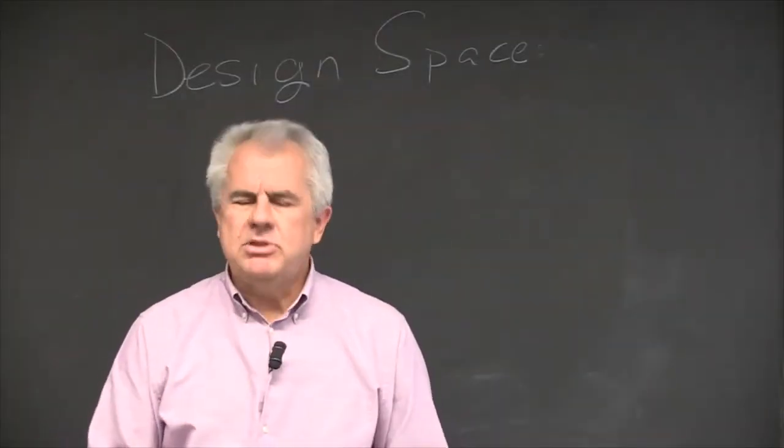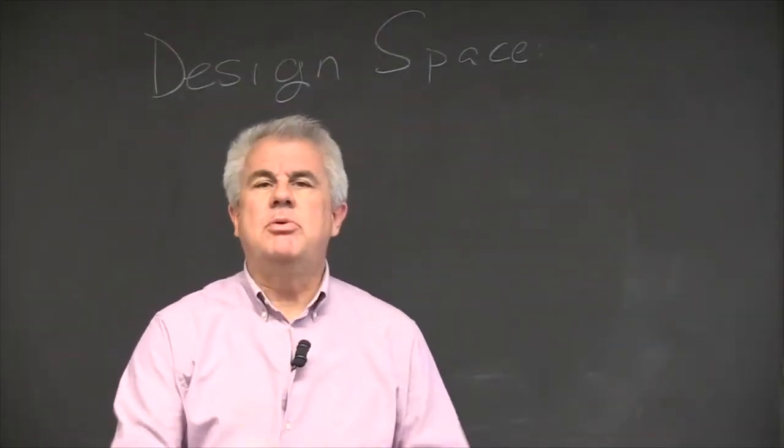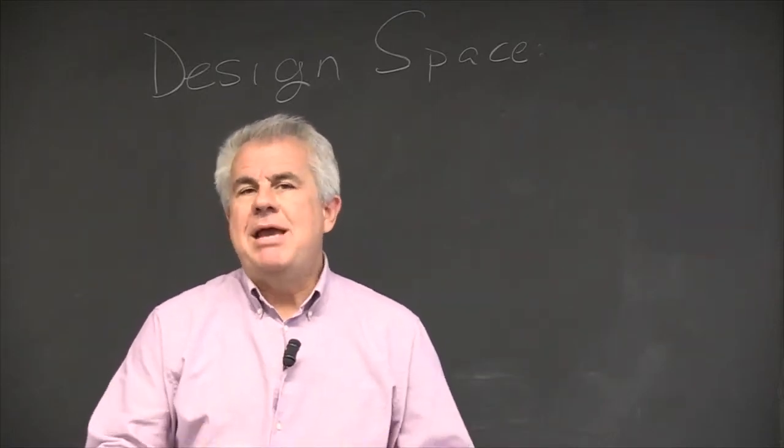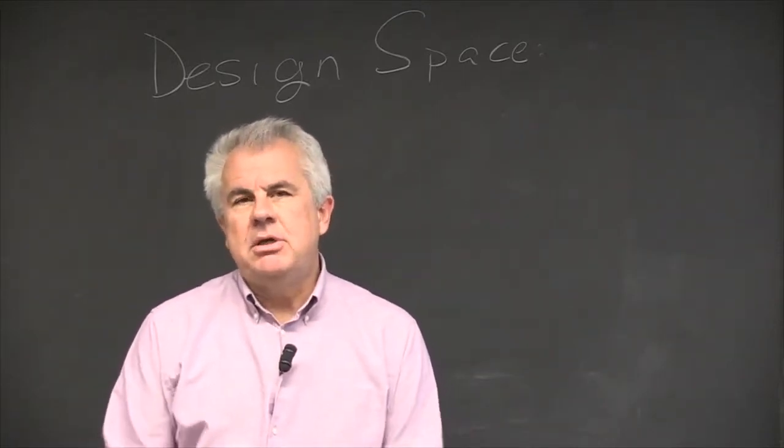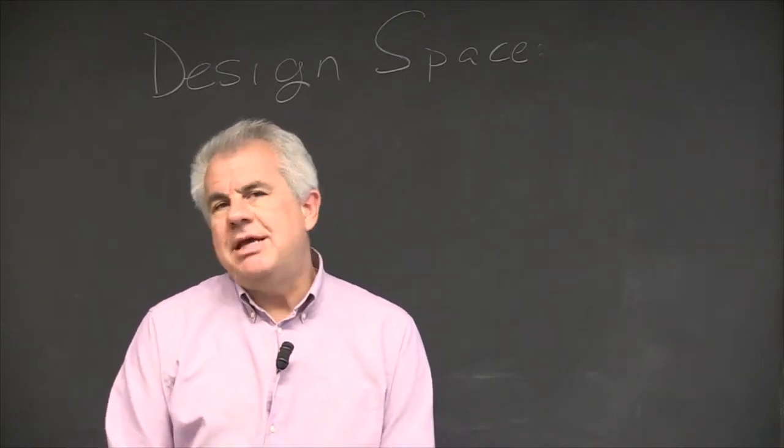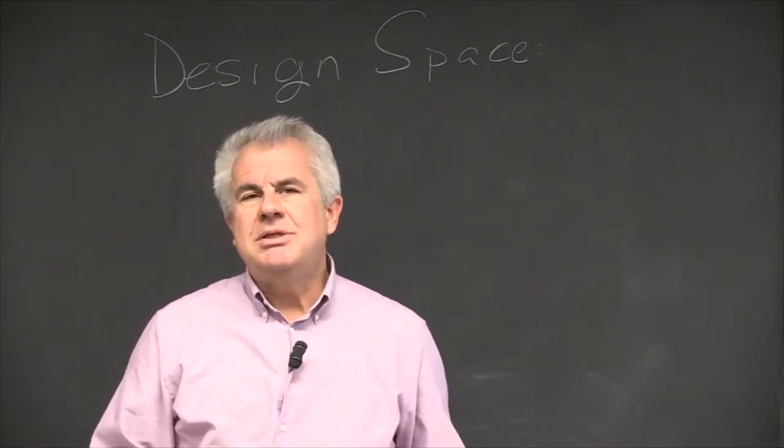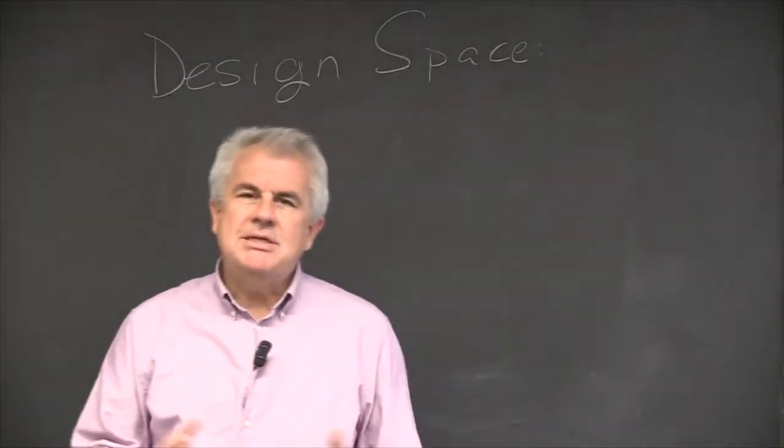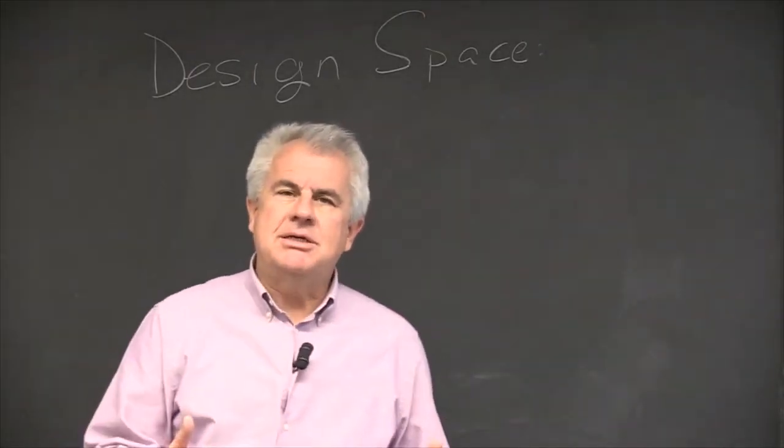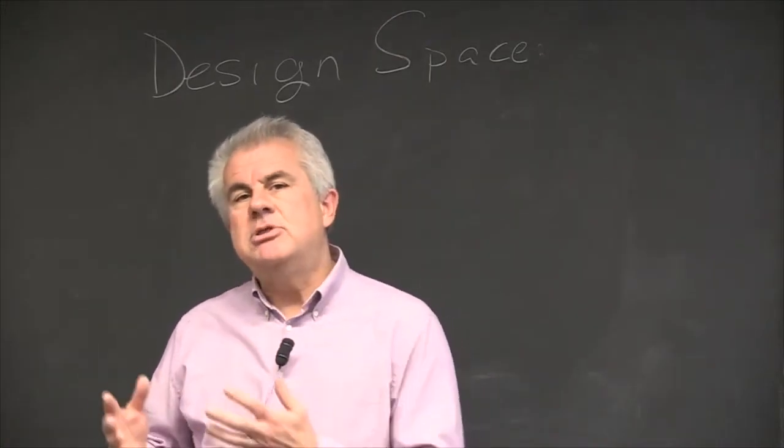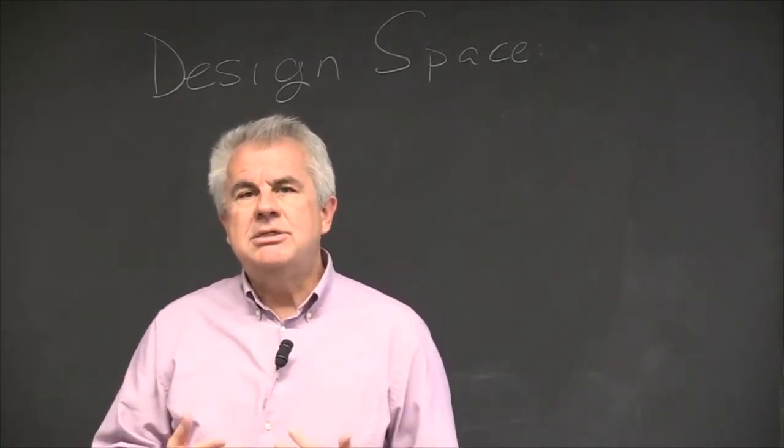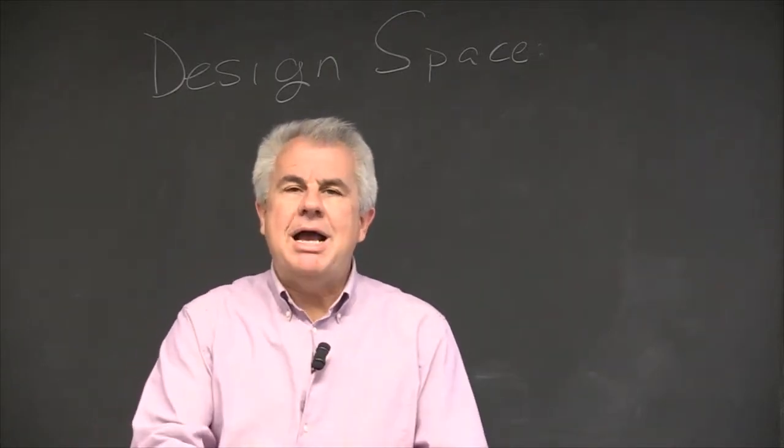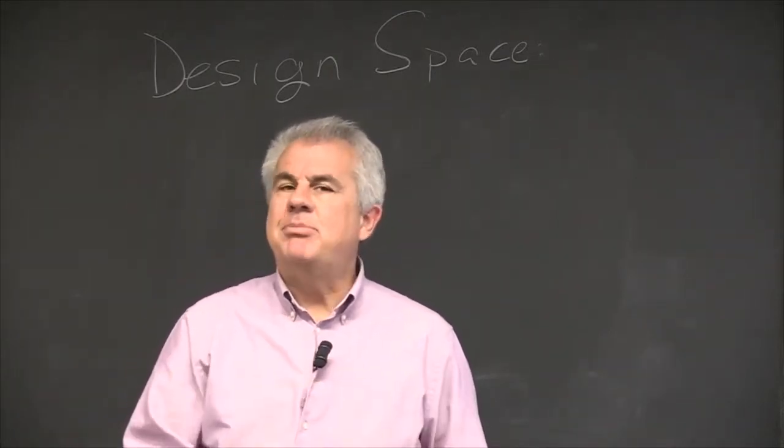Once we have a problem, once we have a concrete demonstrable thing that we're concerned about and we're able to authorize deviation, what's the next step? We feel the next step is to think through what's the design space. What do we mean by the design space? We mean what do the characteristics of different solutions look like in such a way that we can pre-define what we're going to try out and iterate and adapt over.